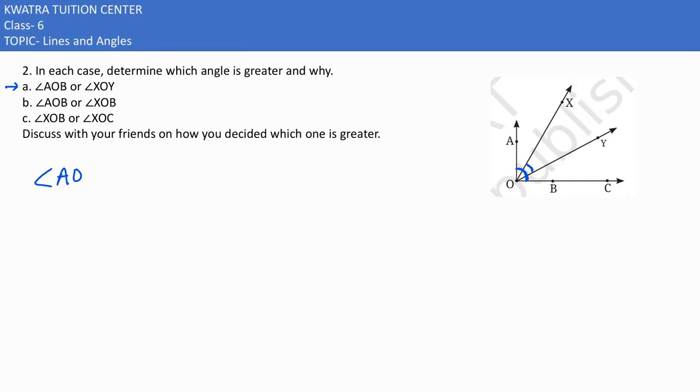You can give this reason as: angle AOB is greater than angle XOY because angle XOY is contained in angle AOB. Whatever angle which is AOB, if this angle exists under it, then obviously it will be smaller. Less area, less turn as compared to AOB.